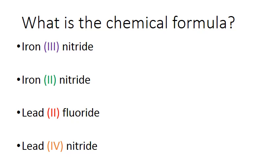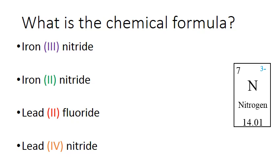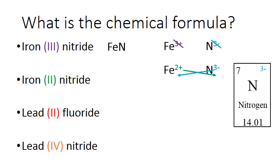Now we'll go the opposite way: start with names and figure out the chemical formula. For iron(3) nitride, nitrogen has a charge of 3-. We don't need to look up iron's charge because the name tells us it's 3+. Since iron is 3+ and nitrogen is 3-, they're both the same, so we cross them out and get FeN. For iron(2) nitride, iron is 2+. Since 2+ and 3- are different, we cross those down and get Fe3N2.